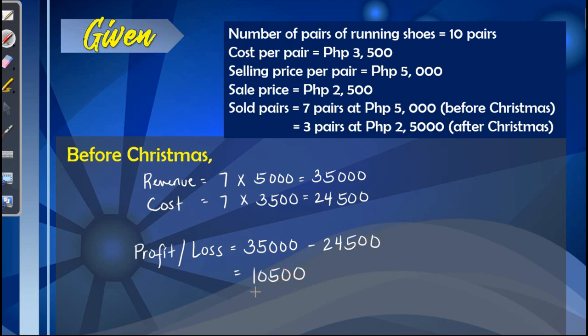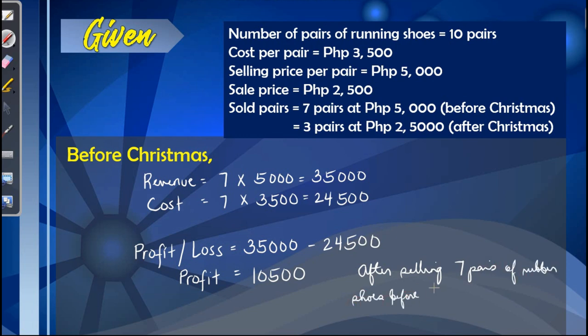Since the result is a positive number, it means there is a profit in selling 7 pairs of running shoes before Christmas. We can conclude that after selling 7 pairs before Christmas, there is a profit of $10,500.